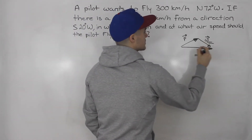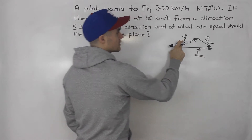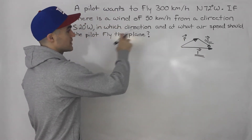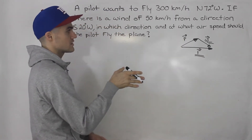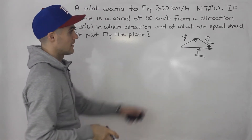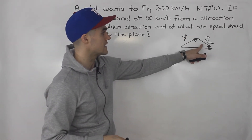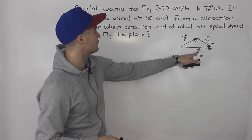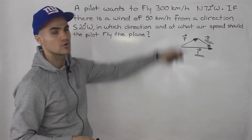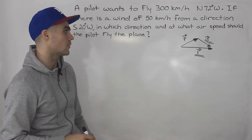So in this question, we're going to have to find the plane velocity — the airspeed — and the direction in which the pilot should steer, and then the wind is going to take the plane and have it fly at 300 kilometers per hour north 72 degrees west.